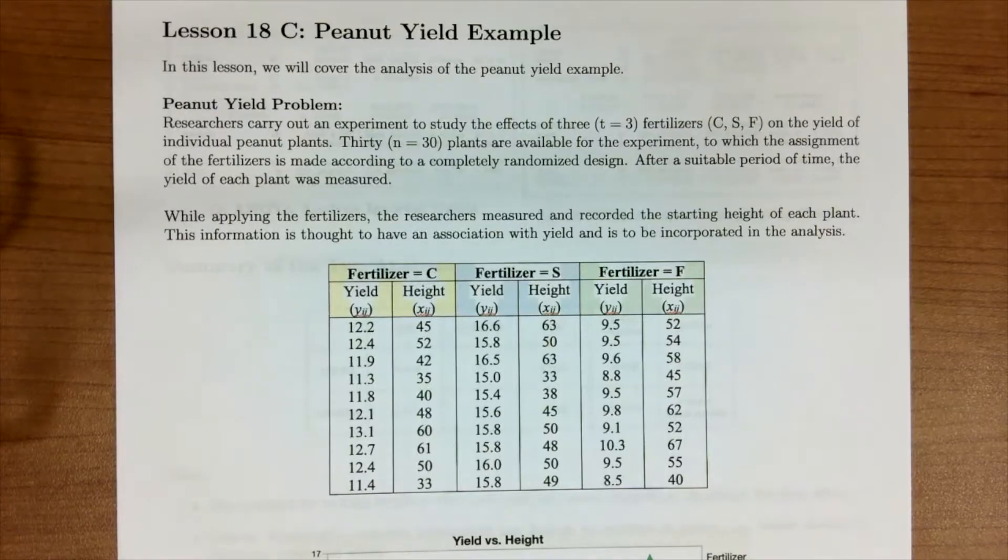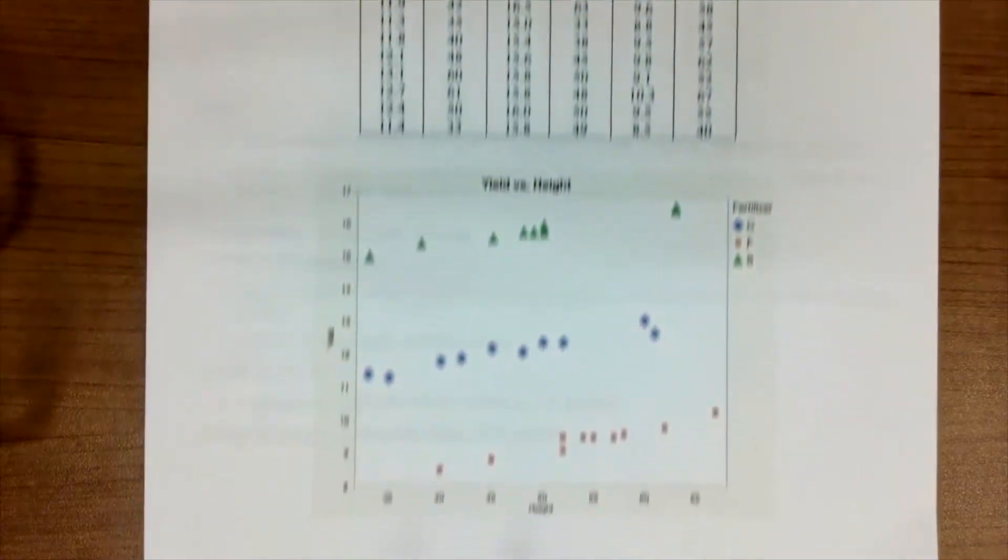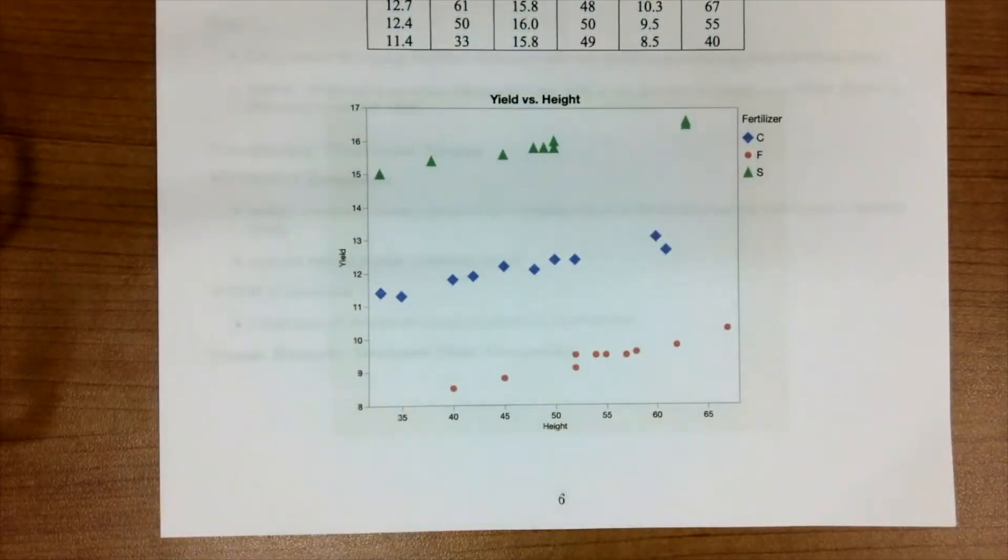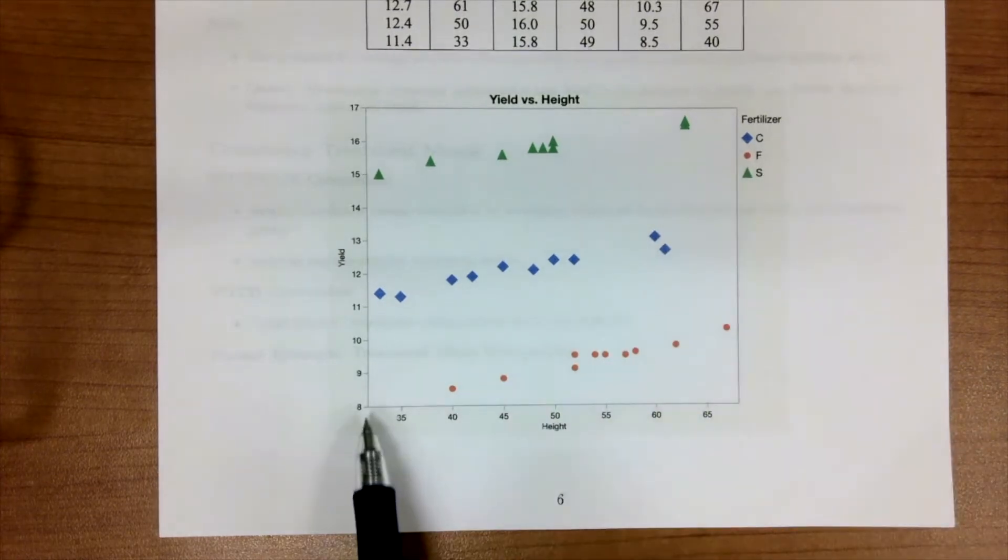One of the first things you want to do when you have this type of data, and it's easy to do in a CRD with one covariate, is just to plot the data to make sure that your covariate and your treatment are not confounded. In this case, overall, we have a good variety in our covariate range for the different treatments. Fertilizers C, F, and S are all in the same range, and it would be appropriate for us to continue our analysis of covariance.